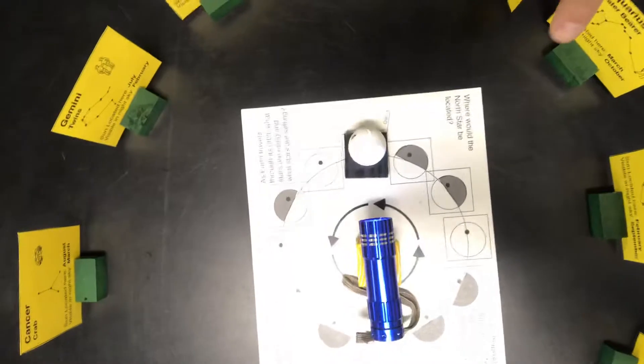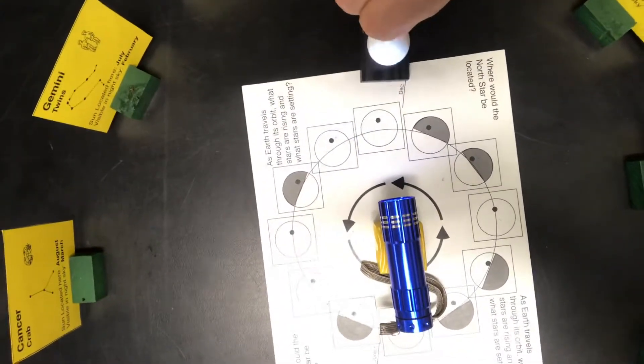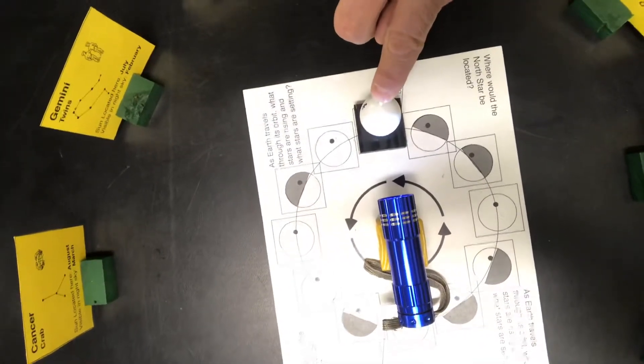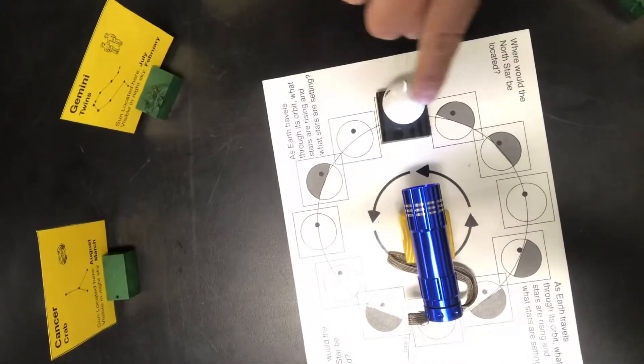And so what I want to have students see is that when the Earth is in the position where it would be in December, the North Pole is tilted away from the sun.